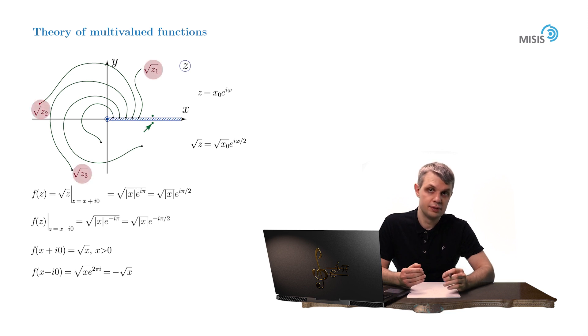And this portion of the square root function has a special name in complex analysis. It's called a regular branch of the square root. Or we could use another definition.